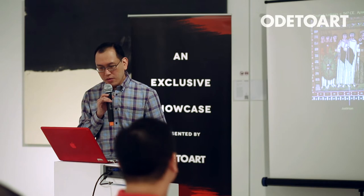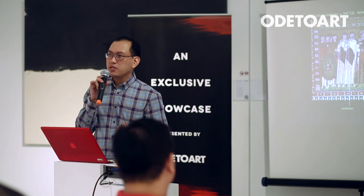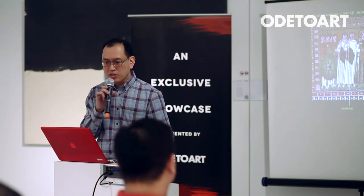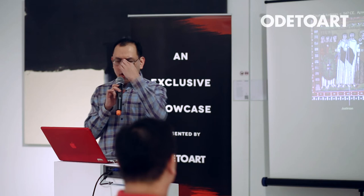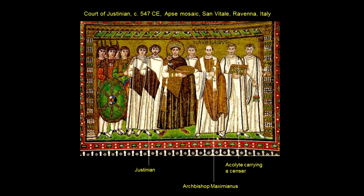And then we go on to the Byzantine period, roughly the sixth century. This particular mosaic — mosaic is an art form which utilizes cut stones, sometimes marble — can be found in a church called the Church of San Vitale in Ravenna, Italy. It shows the court of Justinian.